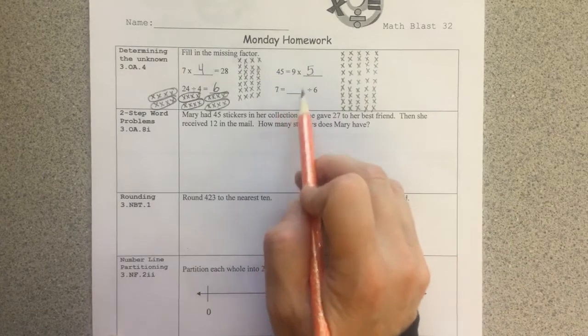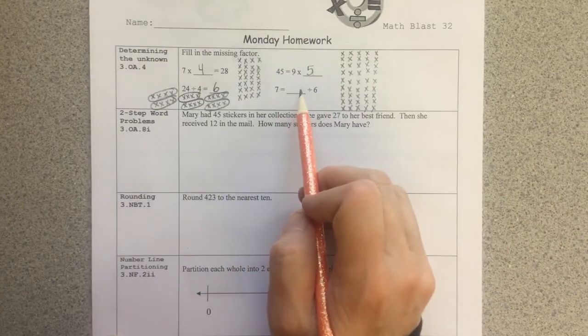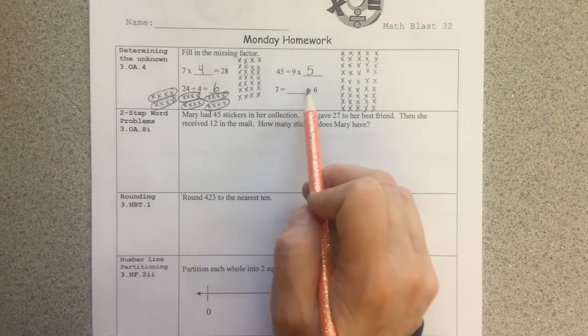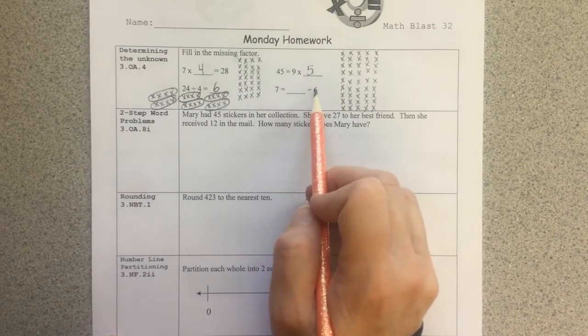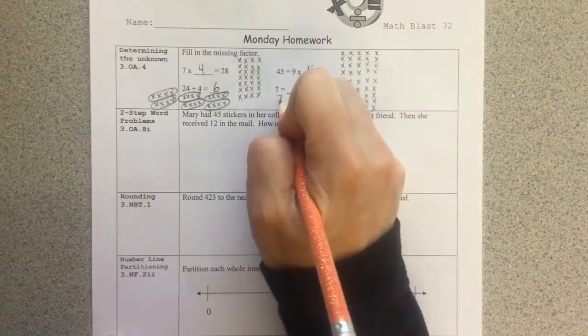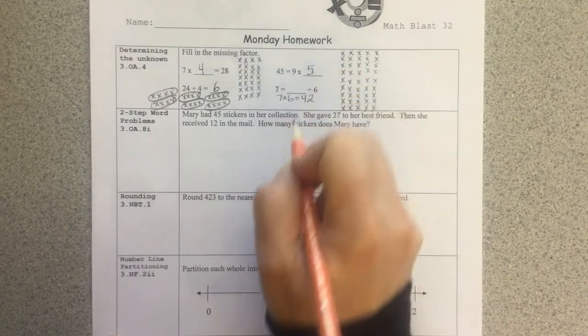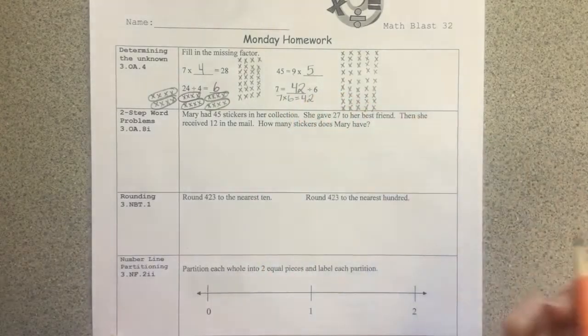7 is equal to something divided by 6. Well, my related facts for division and multiplication can help me with this problem here. I know that I have a total divided by 6, which equals 7. So 7 times 6 should equal that total, which is 42. 7 times 6 is 42. So 7 is equal to 42 divided by 6.